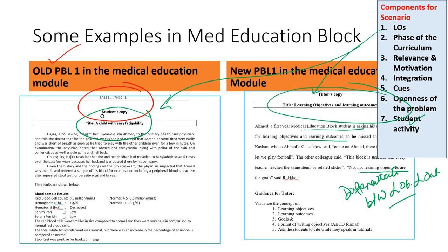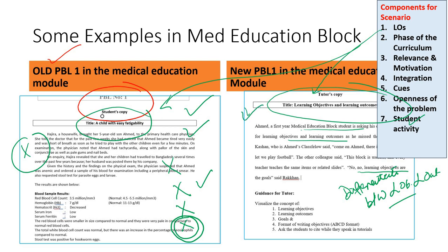The phase of the curriculum may be the same, but the anemia scenario is not relevant — it belongs in a heme block or hematology module, not the medical education block. There is no relevance, and it won't motivate students. It won't promote student activity either, because students won't have prior knowledge of anemia's hematological profile when they are being taught medical education concepts.